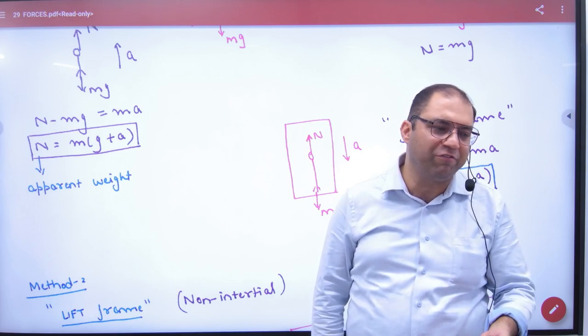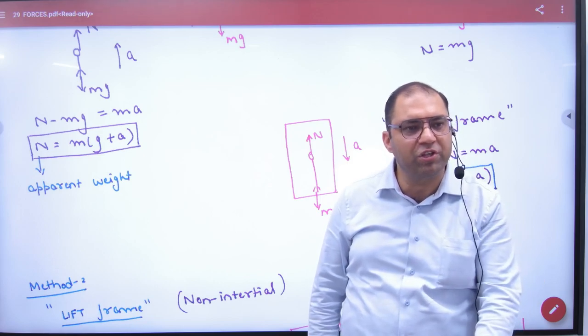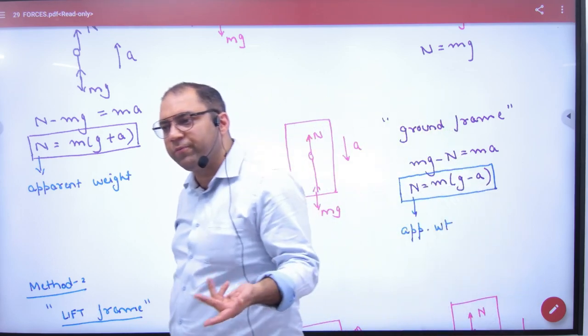Then it will be zero. When in free fall, what will happen? The normal reaction automatically results as zero. So the weighing machine shows zero.